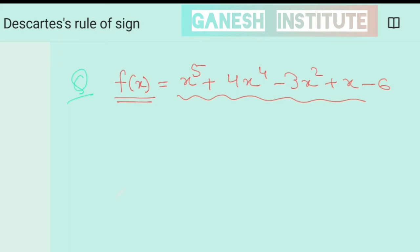So how can you say just by looking at it, if I ask you how many positive real zeros and how many negative real zeros are there? If I ask you, so is it possible for you to say that? So this rule is all about that.